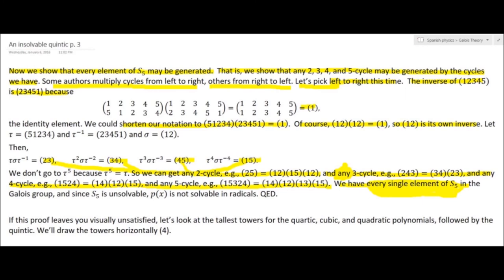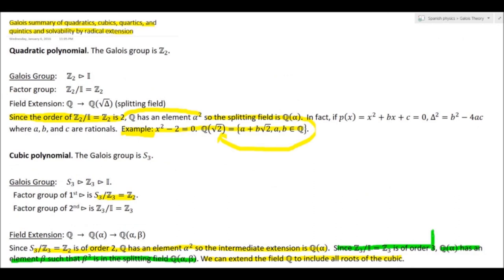This next frame shows that if you have a 2-cycle element and a 5-cycle element in the group, you can basically generate every element of S5. Then let's think about what the quadratic equation means in this language. For ax² + bx + c = 0, there is a number Δ² = b² − 4ac. If a, b, c are rational numbers — in the example x² − 2 = 0 — the field extension is Q(√2) = {a + b√2 : a, b ∈ Q}.